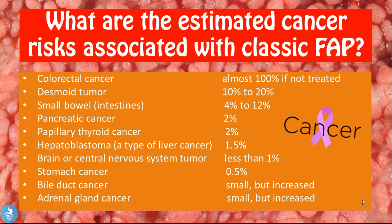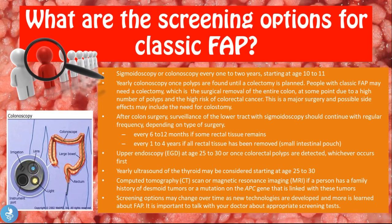For screening in classic FAP, a sigmoidoscopy or colonoscopy every one to two years starting at age 10 to 11 is recommended. Once polyps are found, yearly colonoscopy should continue until a colectomy is planned.